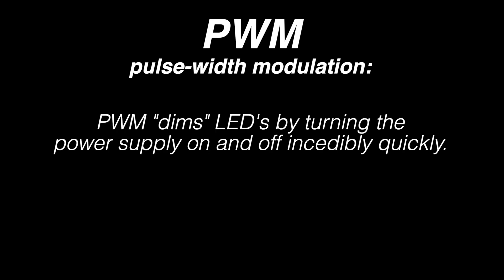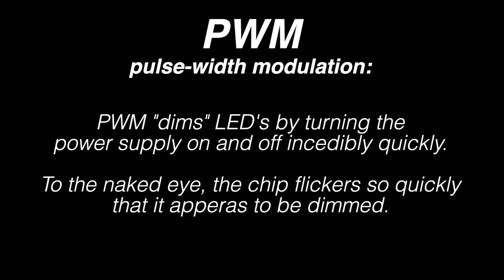Now that we've talked about what an LED needs to operate, let's talk about powering them — specifically dimming them. You'll notice that lots of LED lights when dimmed appear to flicker in high speed video. Why? Well, they're actually flickering, not dimming. Most LED dimmers out there use something called PWM, or pulse width modulation, to dim the chip by turning the power supply on and off super quickly. It can actually give the effect of dimming to the naked eye — in reality though, it's just flickering the power really quickly.